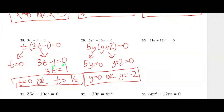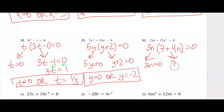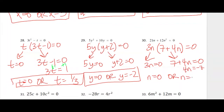Let's see what our GCF is on number 30 — I think we can factor out a 3n, and that leaves me with 7 plus 4n. Setting each equal to 0: n equals 0, or 4n equals negative 7, so n equals negative 7/4.